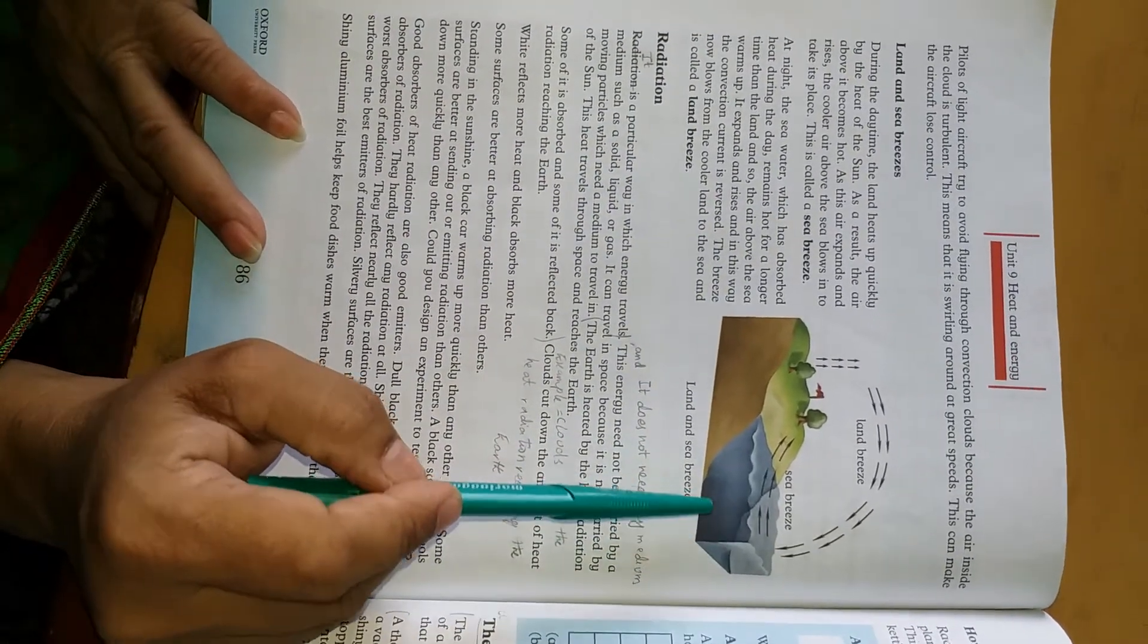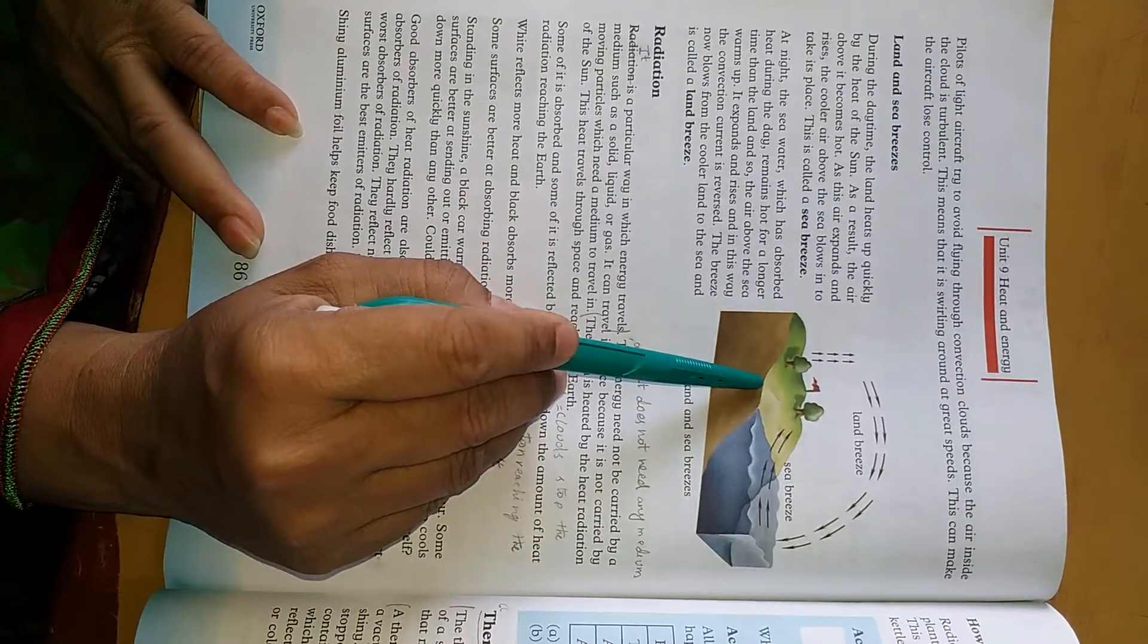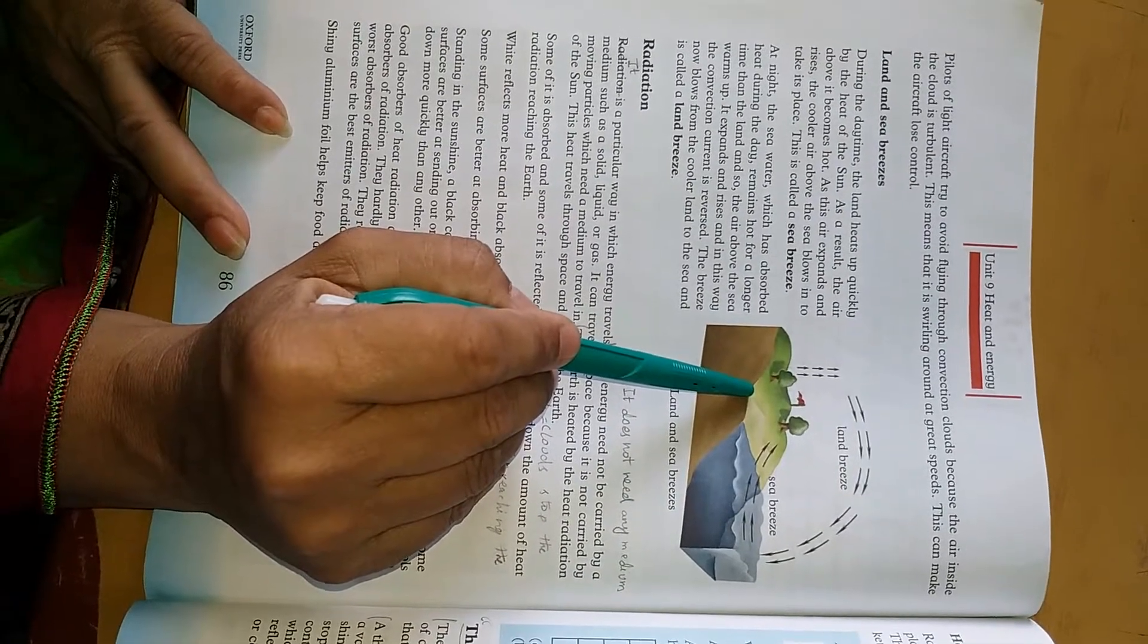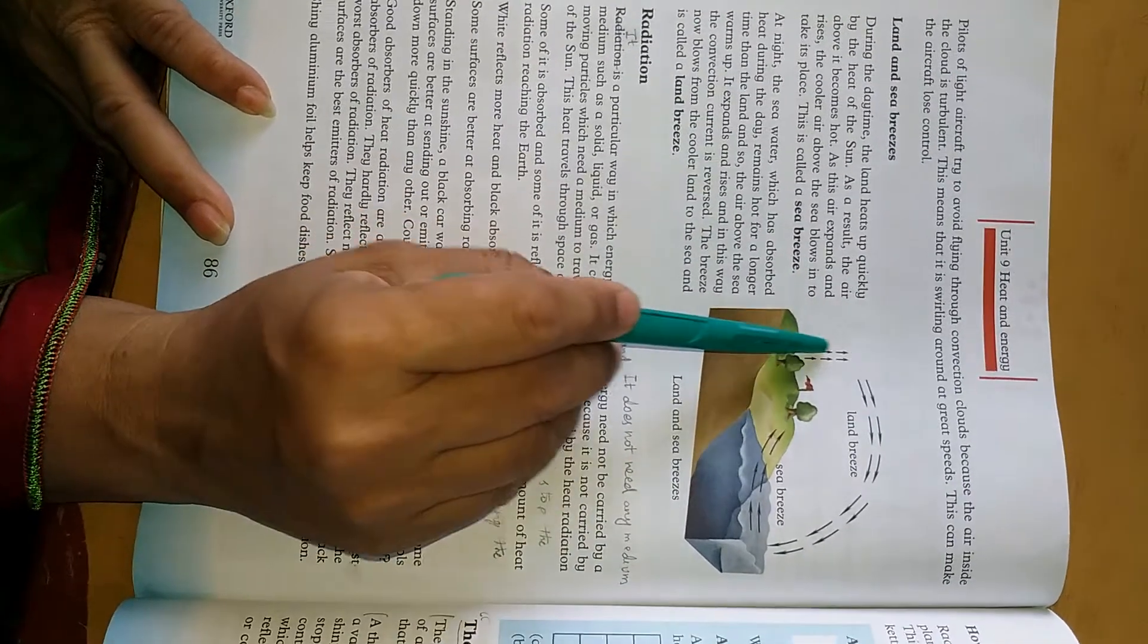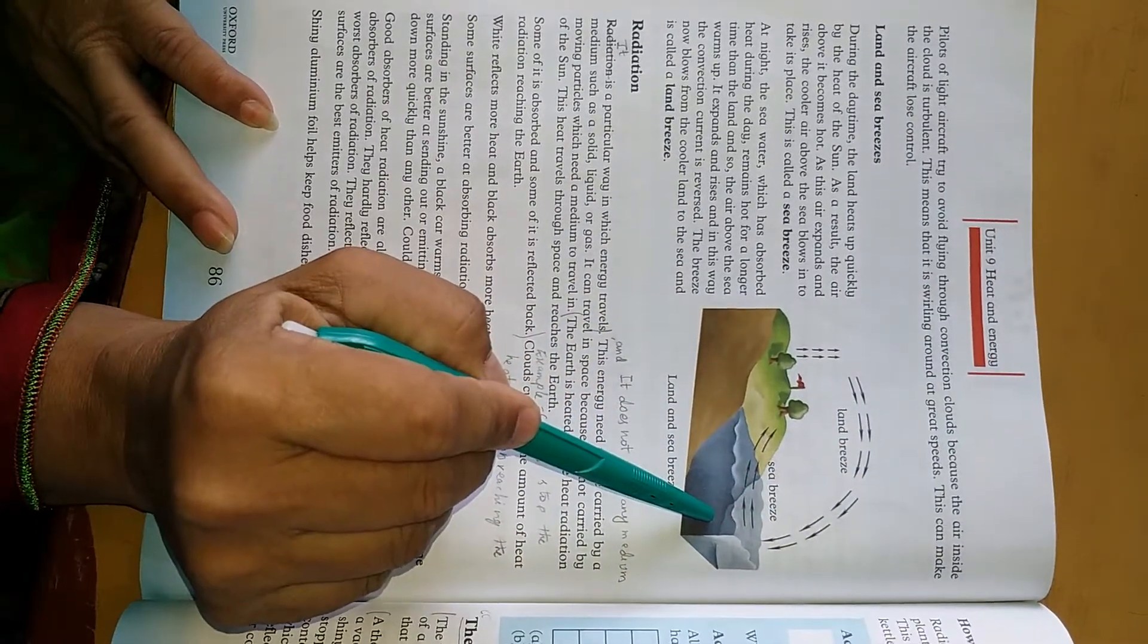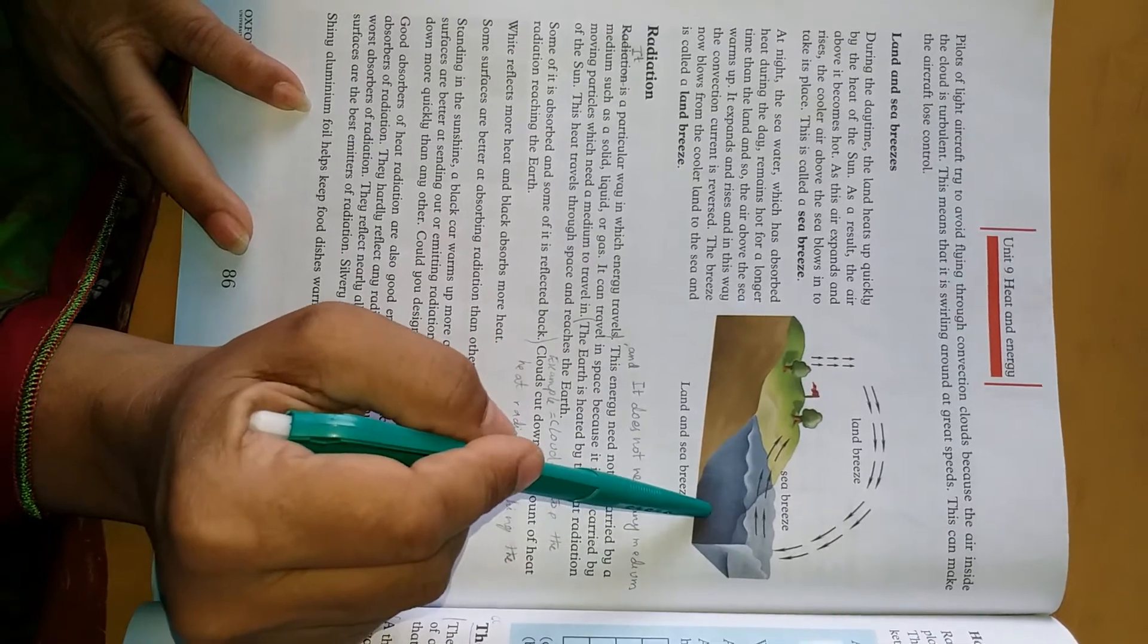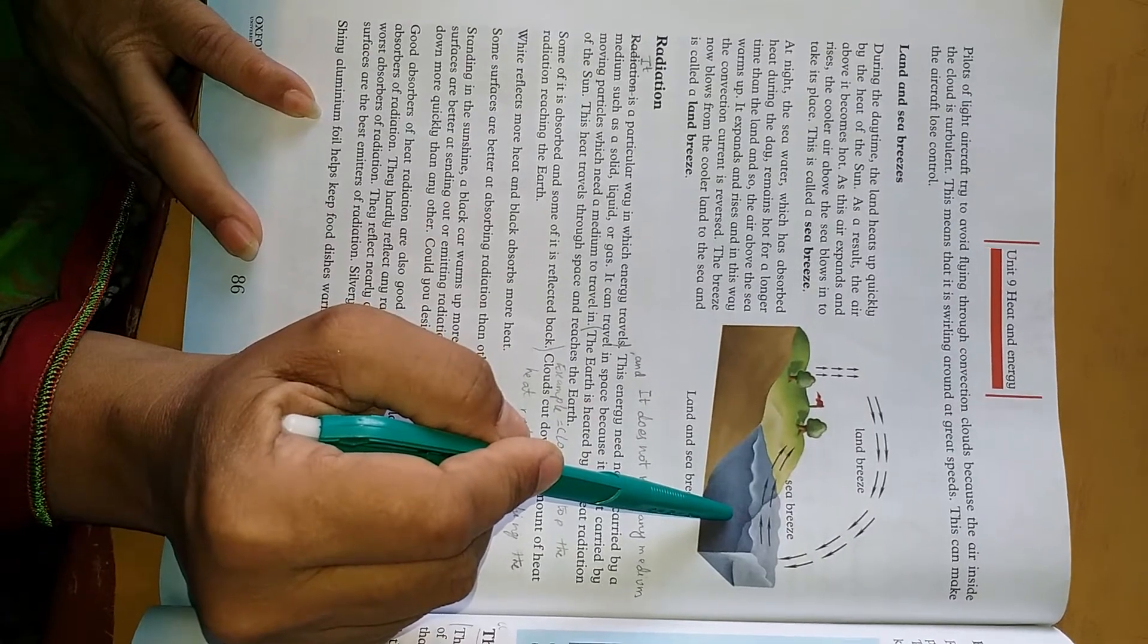You can see here from this picture that this portion is the land and that one is the sea. Due to the heating of the air, it has high pressure and moves from the land towards the sea - this is called land breeze. Similarly, the sea breeze which moves from sea to land due to higher pressure is called sea breeze.